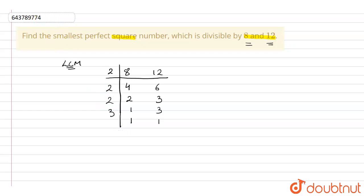So the LCM of 8 and 12 will be equal to 2 into 2 into 2 into 3, that comes out to be equal to 24.